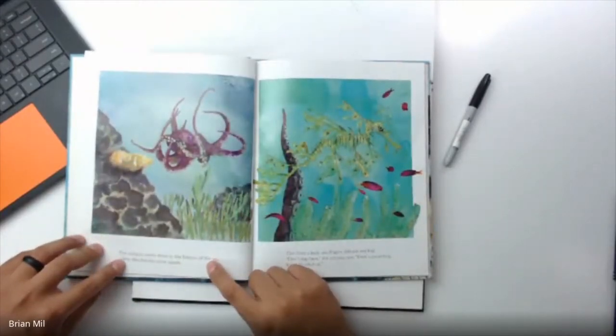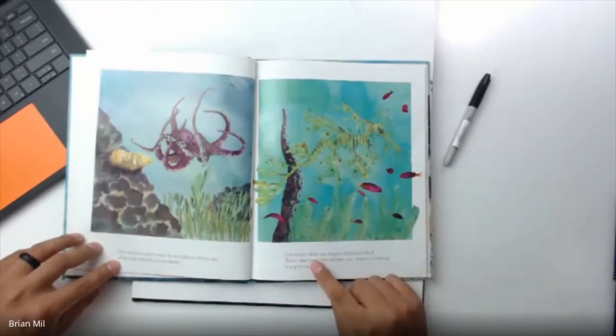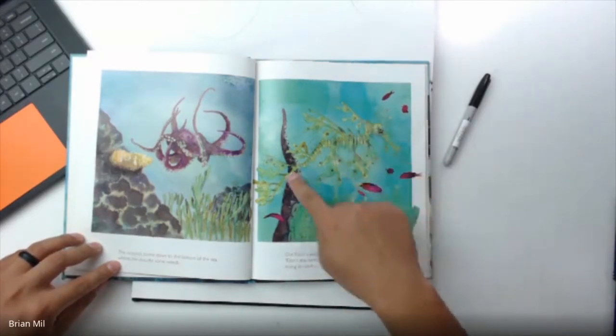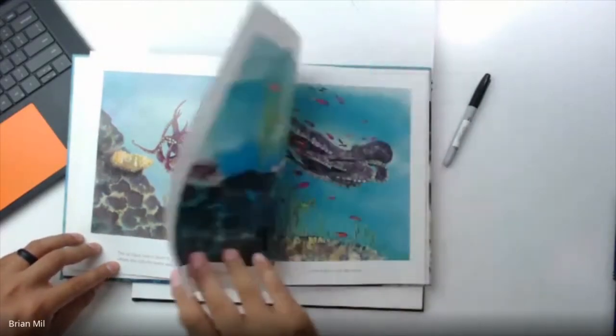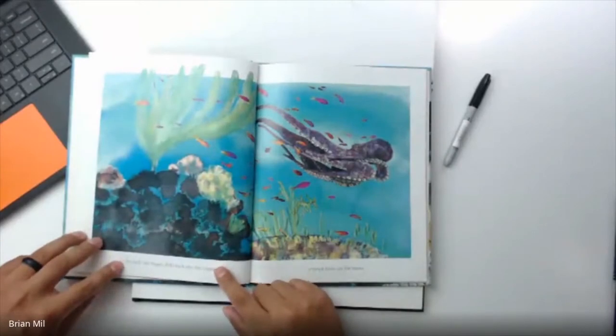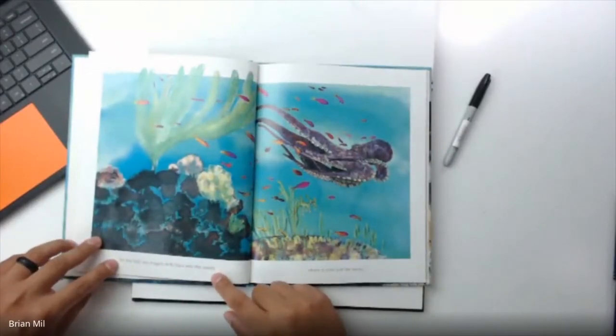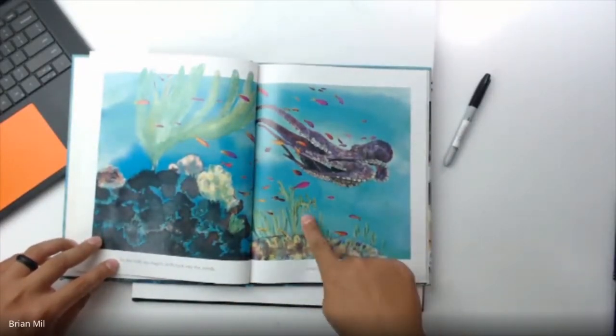The octopus swims down to the bottom of the sea where she disturbs some weeds. Out floats a leafy sea dragon, delicate and frail. Don't stay here, the octopus says, there's something trying to catch us. So the leafy sea dragon drifts back into the weeds where it looks just like leaves. It's kind of camouflage.